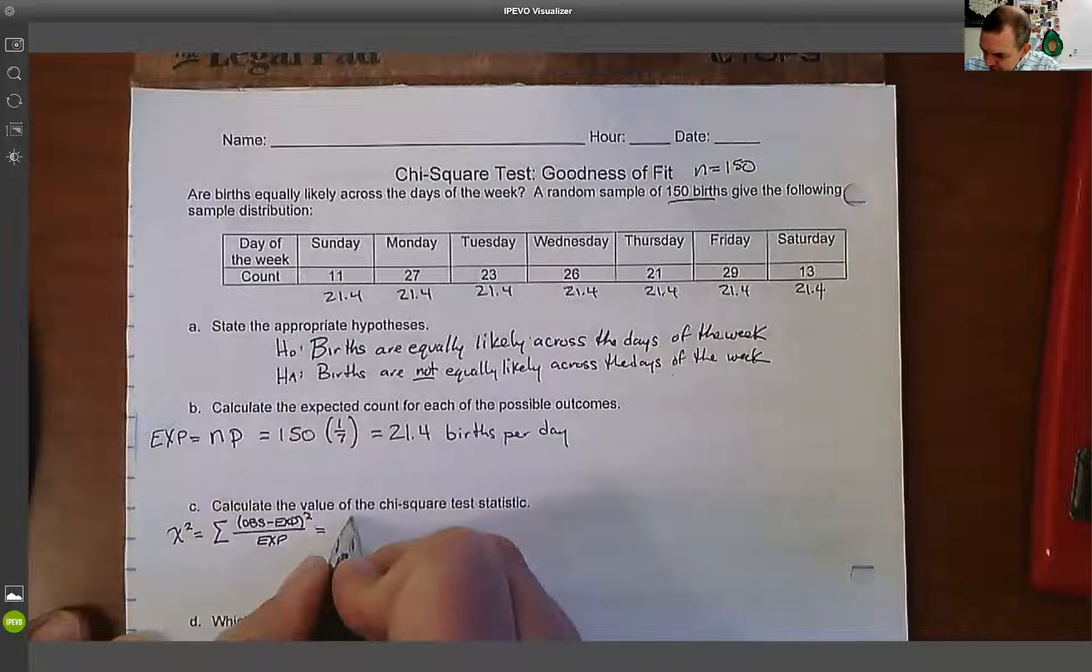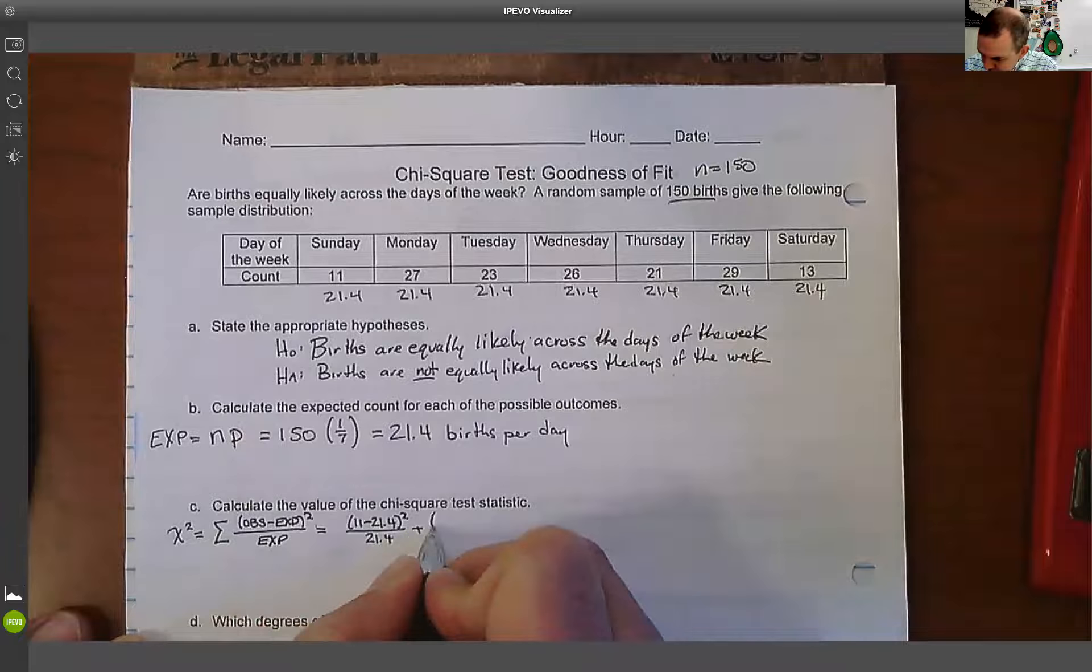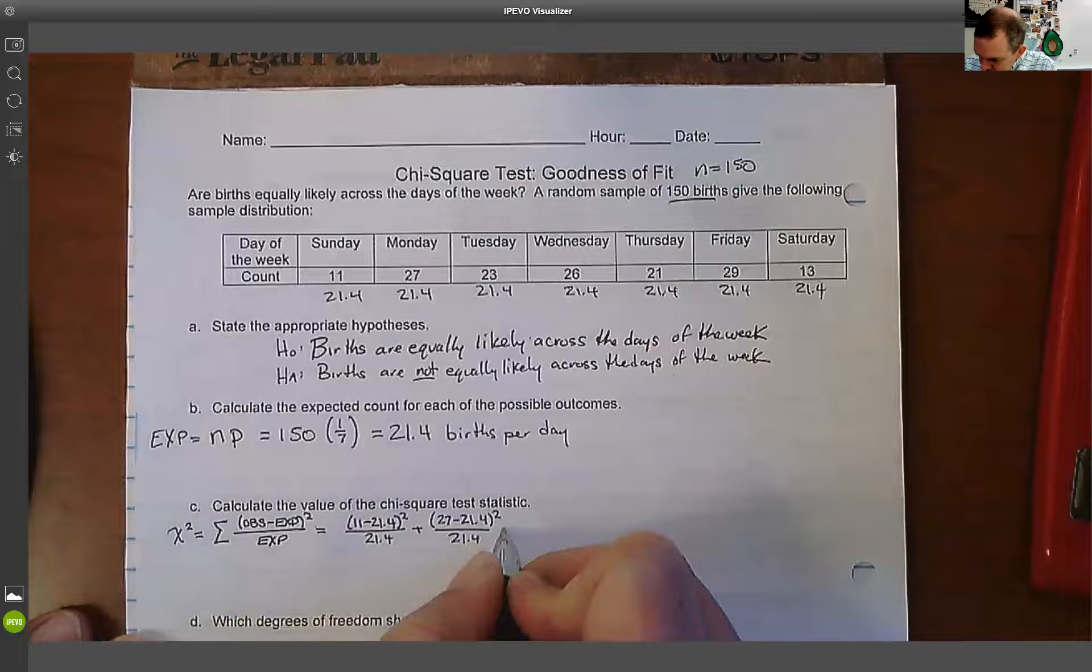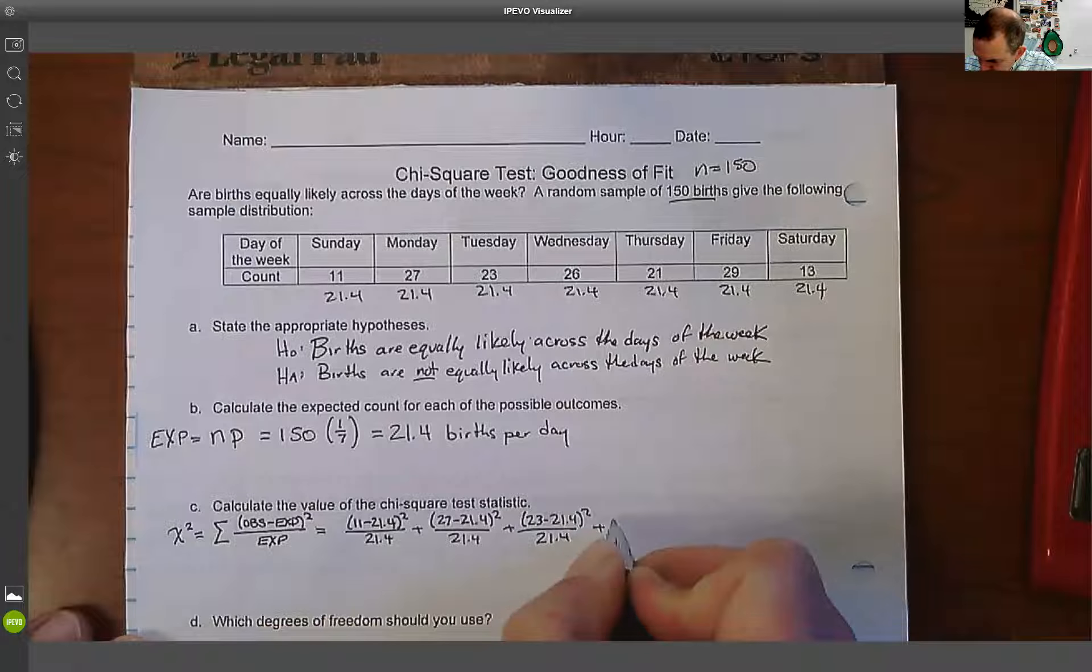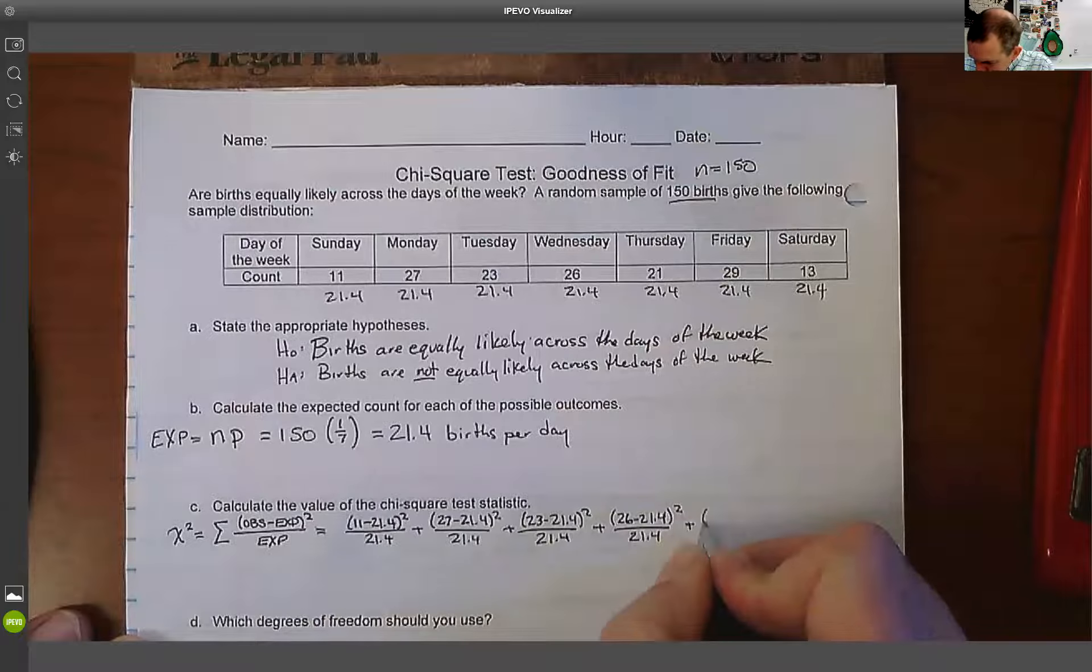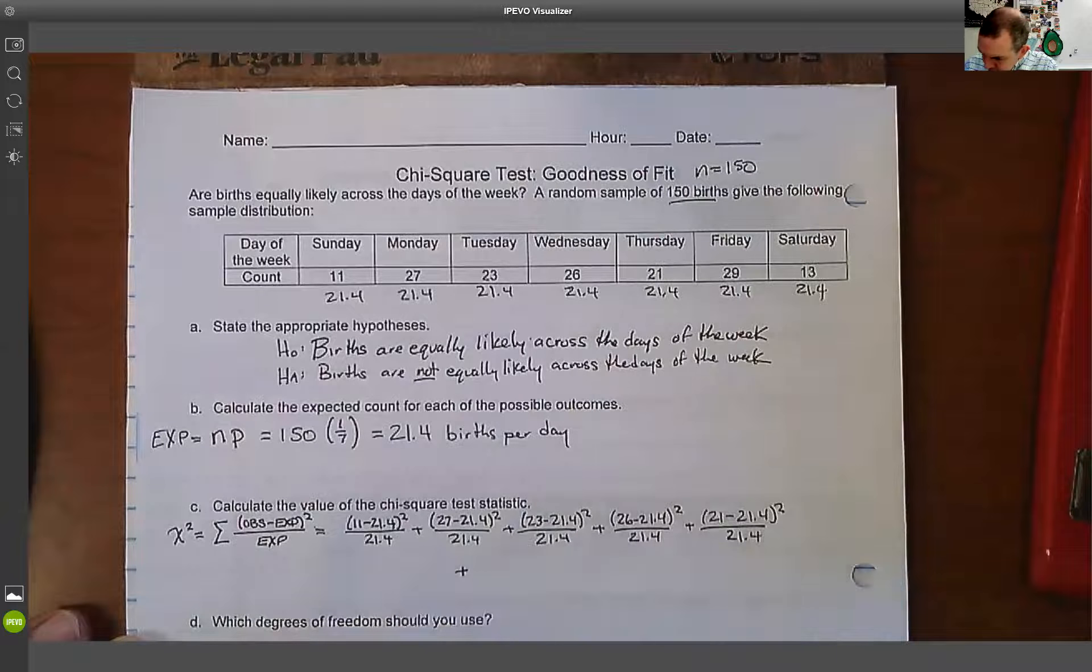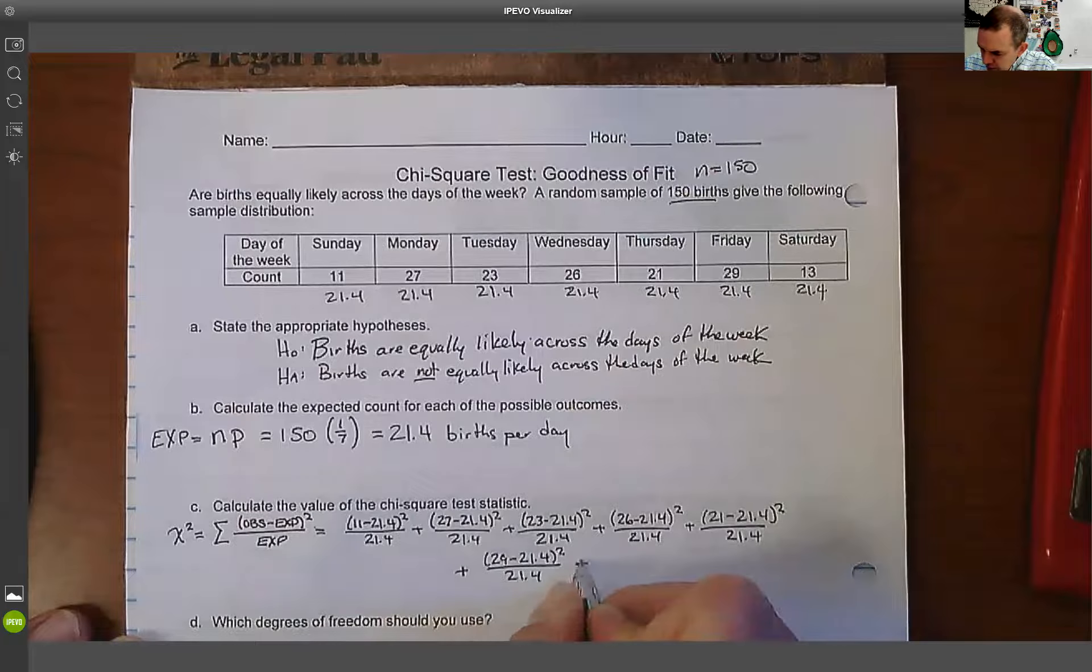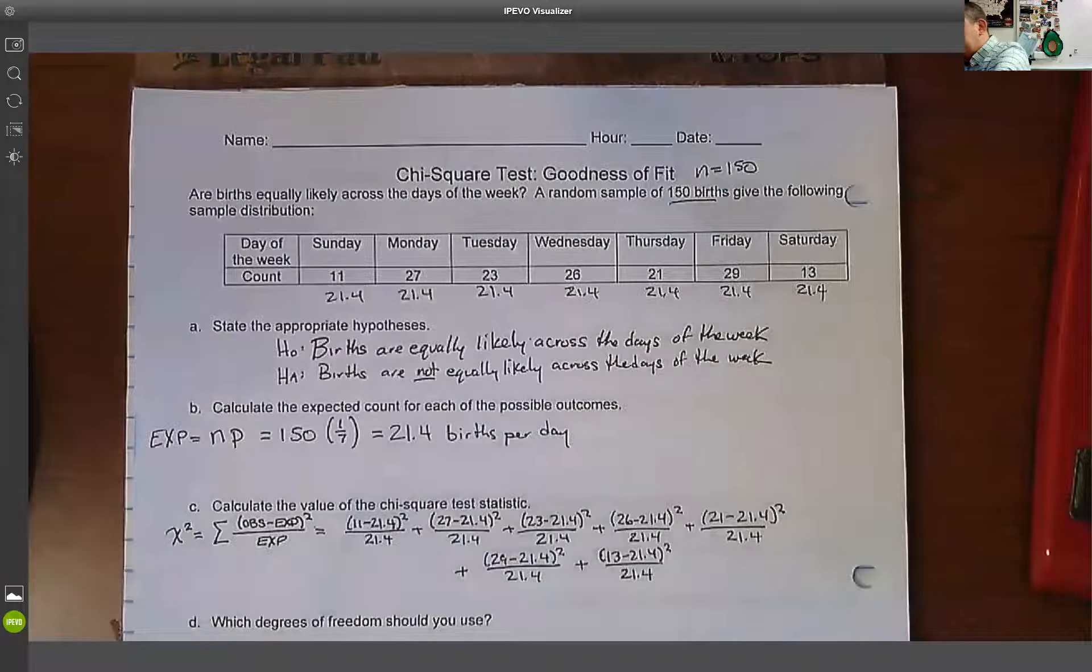So what it is, it's going to be how far is 11 from 21.4 squared divided by 21.4, plus how far is 27 from 21.4 squared over the expected, plus 23 minus 21.4 squared over 21.4, plus 26 minus 21.4 squared over 21.4, plus 29 minus 21.4 squared over 21.4, plus 13 minus 21.4 squared over 21.4.